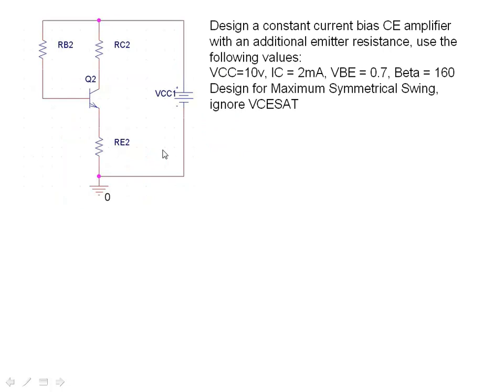Now in this design we've actually got an emitter resistance, and it's got a value or the name is RE2, and its value is a design variable RE2 that we're going to calculate. Again, we're doing exactly the same thing. Notice on here as well, we're ignoring VCE saturation. So let's start our design.